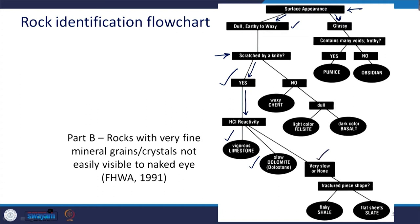If there is very slow or non-reactivity, we have to check the piece shape when the rock is fractured. If it is flaky, then it is shale; if it is flat sheets, then it is slate. Both shale and slate may look similar because they are both foliated, but the difference lies in the shape of the fractured pieces. First the appearance, then whether scratched by a knife, then HCL reactivity, and then fractured piece shape.